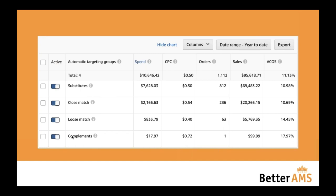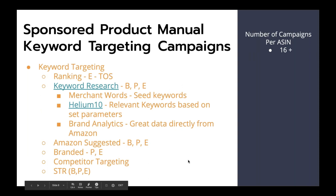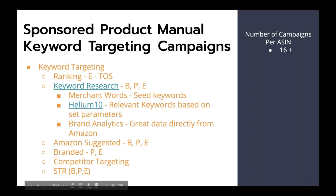It's a basic principle, but a lot of people don't take the time to launch auto campaigns for every single one of their ASINs. We love doing this because we can constantly pull our search term report and collect a ton of data. Now, for sponsored product manual keyword targeting campaigns — this is where we're getting into the fun stuff. For every single ASIN, we're going to want to launch multiple manual keyword targeting campaigns.